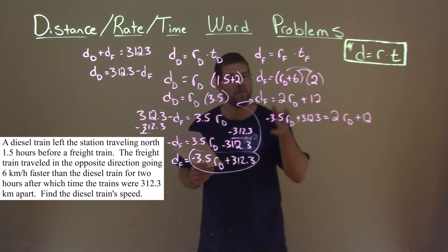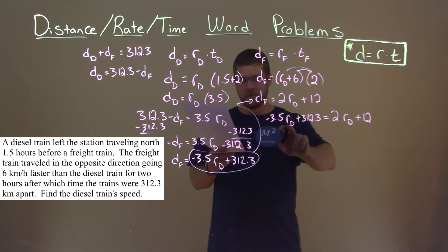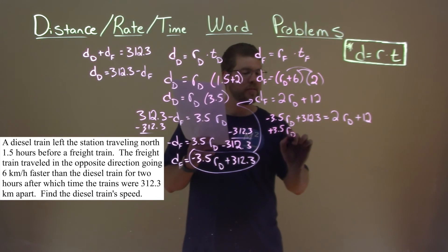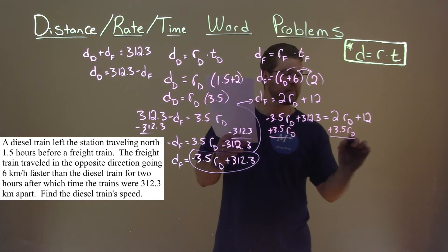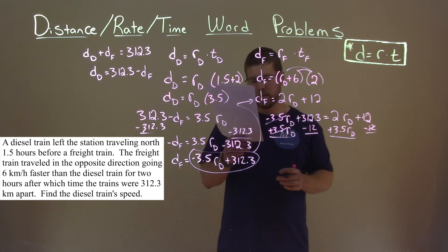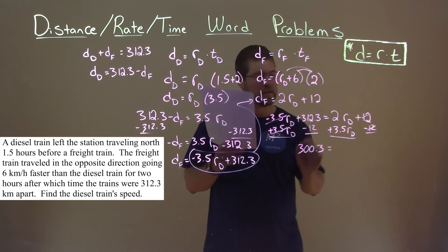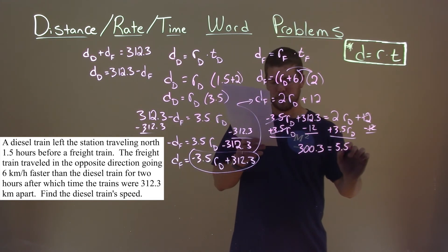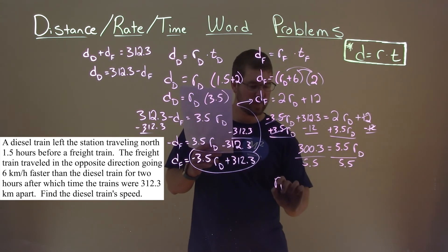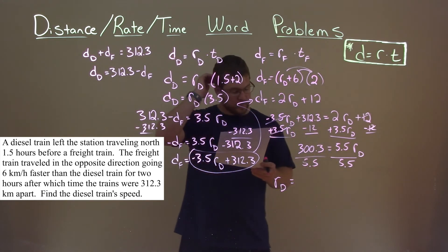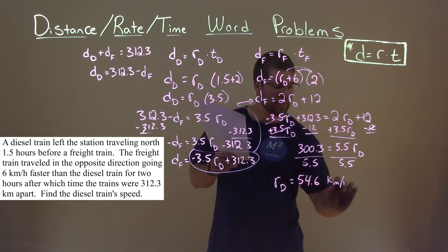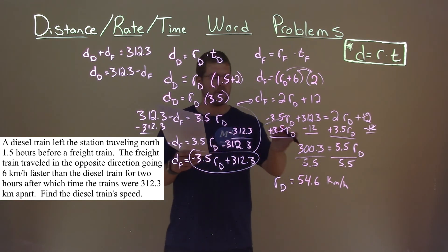We're pretty happy here — we have one equation and the only variable is the rate of the diesel train, which is what we want to find. I'm going to add 3.5 times the rate of the diesel train to both sides — that cancels out — and subtract 12 from both sides — that cancels out. So 312.3 minus 12 is 300.3, and 2 plus 3.5 is 5.5, multiplied by the rate of the diesel train. Dividing both sides by 5.5, the rate of the diesel train equals 300.3 divided by 5.5, which is 54.6 kilometers per hour. The diesel train's speed is 54.6 kilometers per hour.